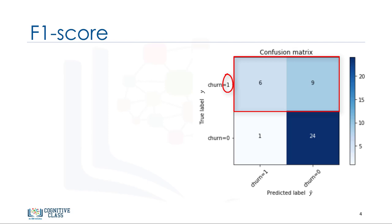The first row is for customers whose actual churn value in the test set is 1. As you can calculate, out of 40 customers, the churn value of 15 of them is 1. And out of these 15, the classifier correctly predicted 6 of them as 1 and 9 of them as 0. This means that for 6 customers, the actual churn value was 1 in the test set, and the classifier also correctly predicted those as 1. However, while the actual label of 9 customers was 1, the classifier predicted those as 0, which is not very good. We can consider this as an error of the model for the first row.